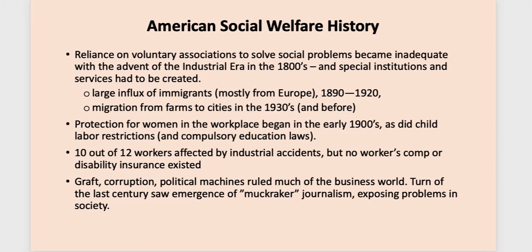Voluntary associations were really the basis for much of the provision of services in the 1800s, and they became particularly inadequate when the industrial era began. There was also a very large influx of immigrants late in the 1800s and into the 1900s, mostly from Europe, and a migration of individuals from farms to cities. The population centers had a lot of social service needs and didn't always have the funding necessary. Some protection for women in the workplace began in the early 1900s. Women had started working in factories at the onset of the Industrial Revolution — the first time many found a role outside the home — but there was little protection for them. If you've read The Jungle, you know something about that.